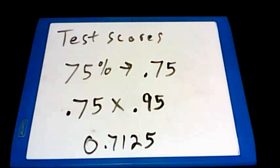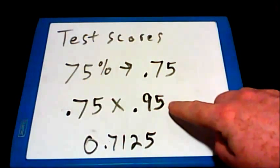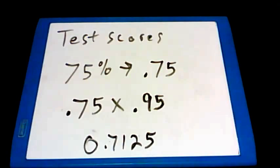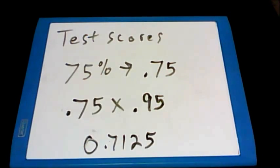And also from the problem, we saw that John scored a 95% on his test, so that changes to 0.95. And just like before, we need to multiply those two decimals, 0.75 times 0.95, to get his weighted score of 0.7125.